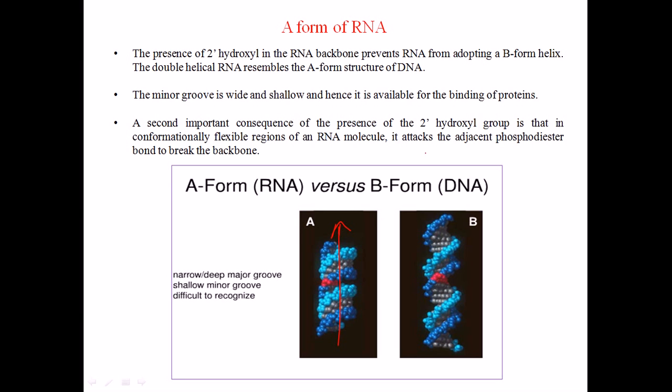As there is a presence of the 2' hydroxyl group in the ribose sugar, it is a conformationally flexible region of an RNA molecule. The presence of this 2' hydroxyl group in RNA prevents the RNA double helix from maintaining the B-form.